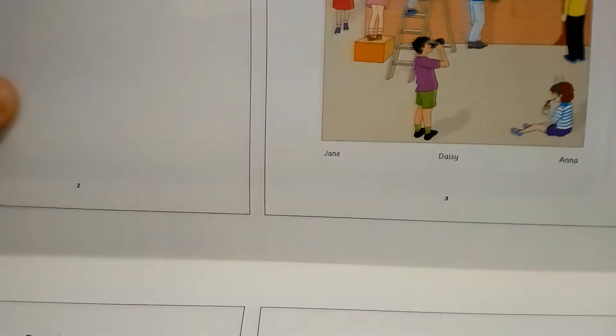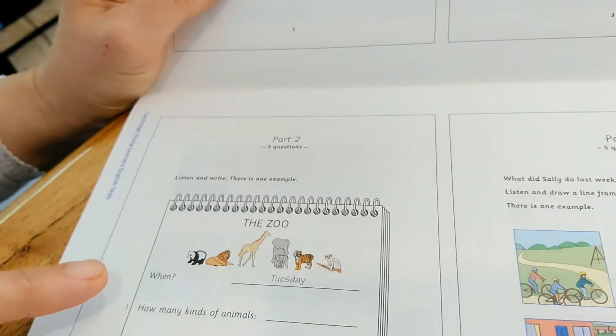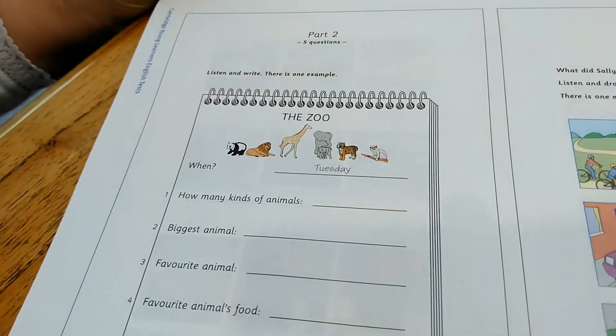Part two. You have listen and write. There is one example. So you have to complete writing only one word.